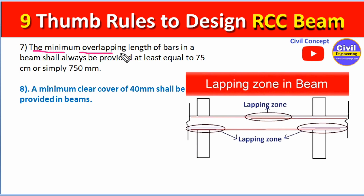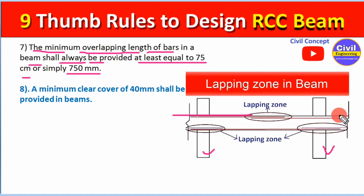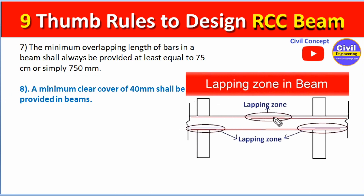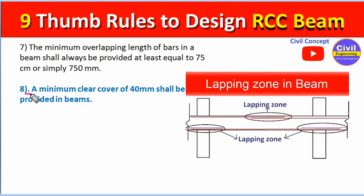Point number seven: the minimum overlapping (lap) length of rebar in a beam shall always be at least 750 mm. You can see the beam supported on columns — lapping of rebar should be more than 750 mm. Importantly, lapping should not be provided at the bottom of the beam, since maximum moment acts there. Lapping should be provided at the top or near the ends.